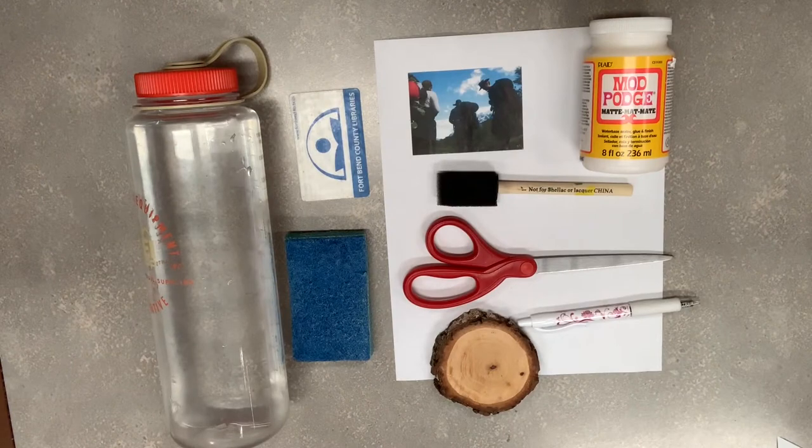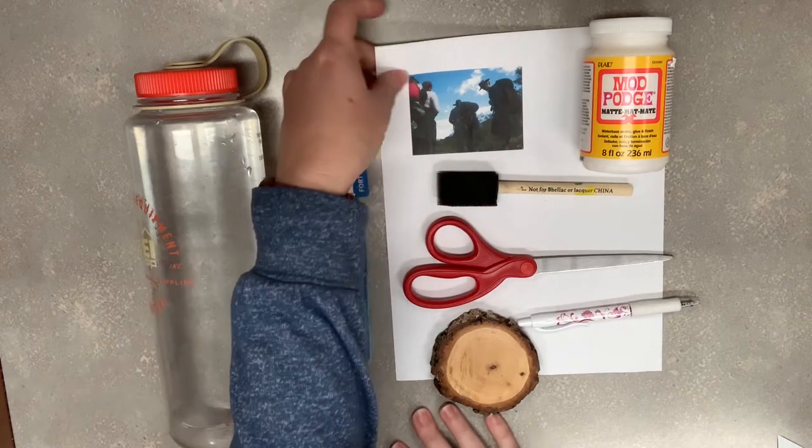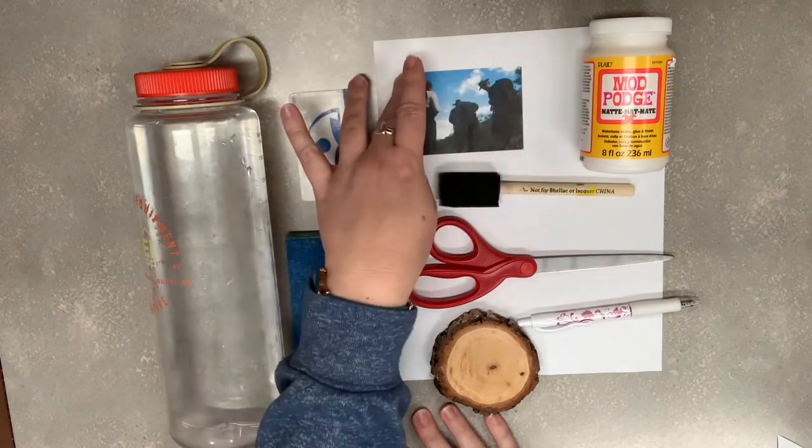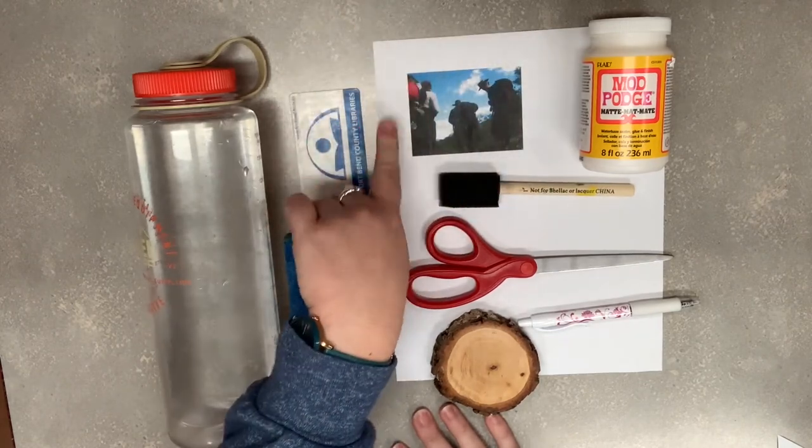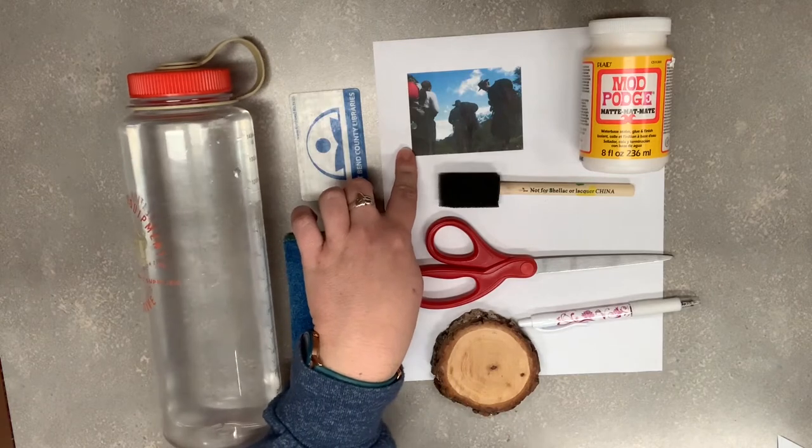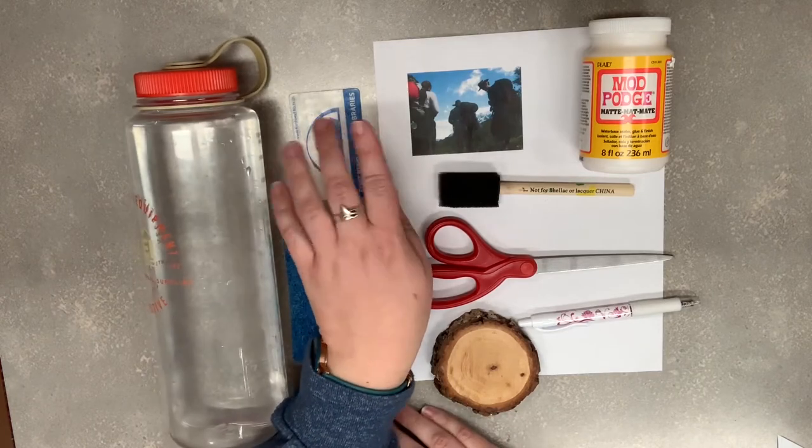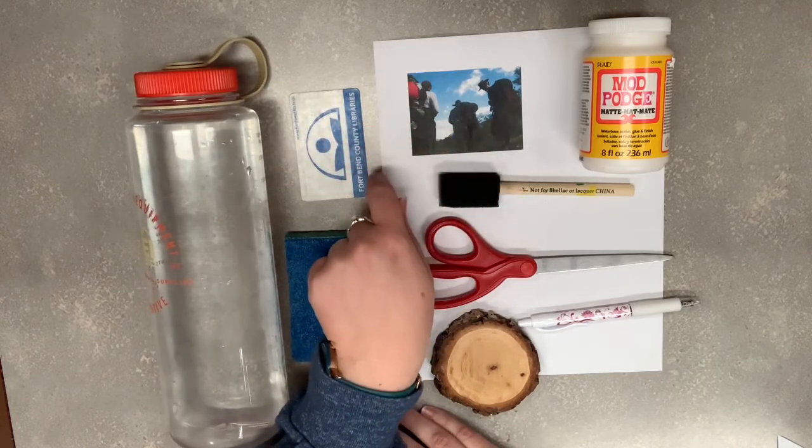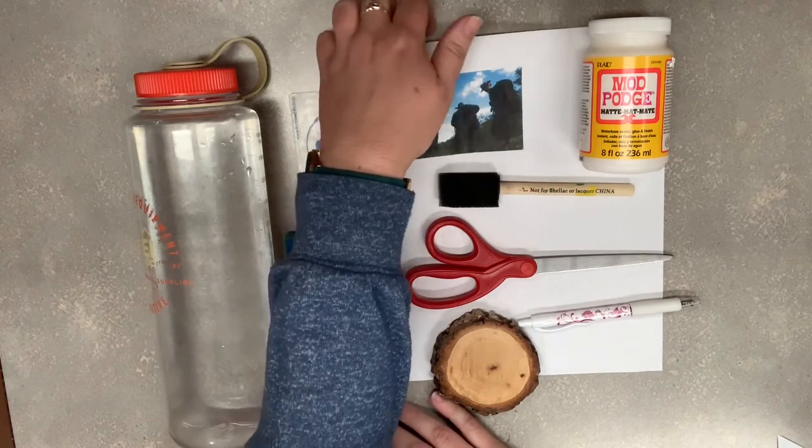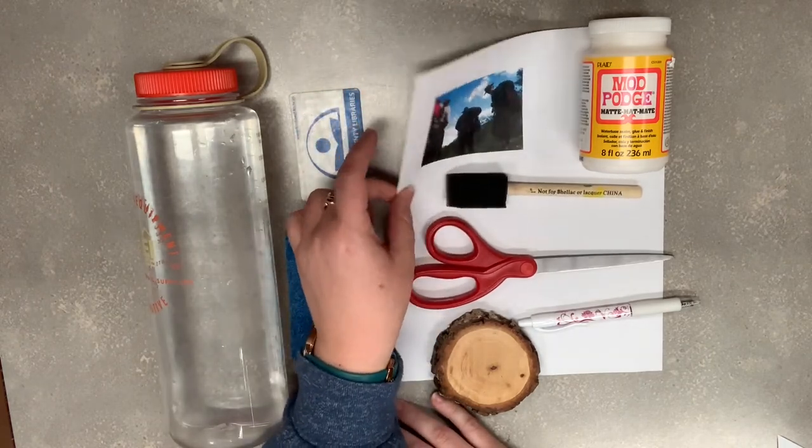These are the supplies you're going to need to do an image transfer. First, you're going to want an image on a piece of regular copy paper, and you want to make sure this is printed with a laser printer. Otherwise, during the transfer process, the ink might smear. Just use regular copy paper, nothing thick like cardstock.